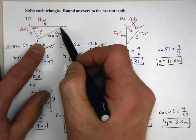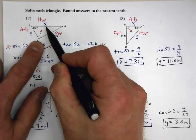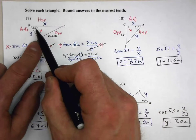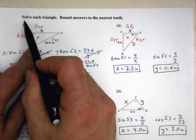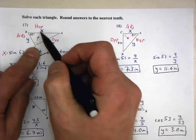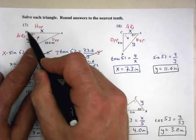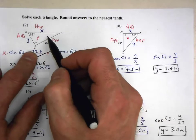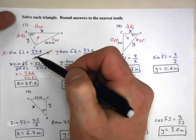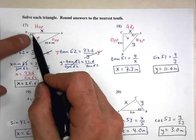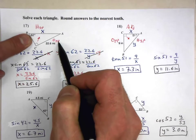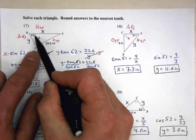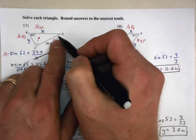Remember, we can only do trig on a right triangle. Across from the right angle is always the hypotenuse, so label that. In this case they gave us one angle and one side, and they're asking us to solve the triangle — meaning find all side lengths. I'll call this side x and this side y. We're doing trig from the 62-degree angle, so this side is the opposite side and this side is the adjacent side.